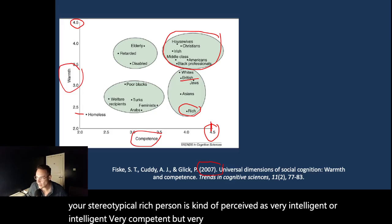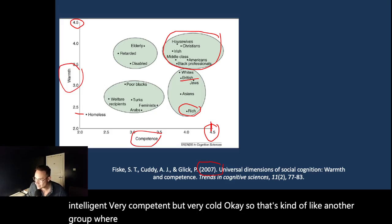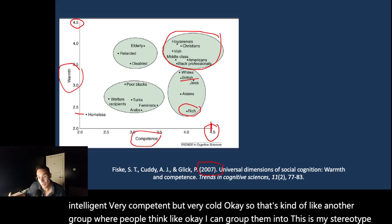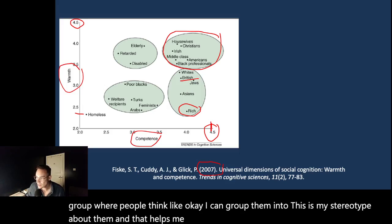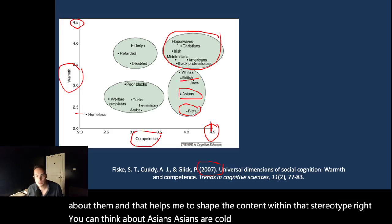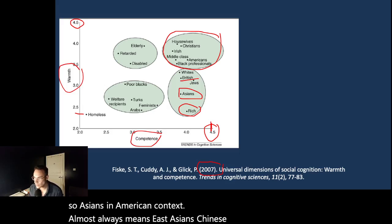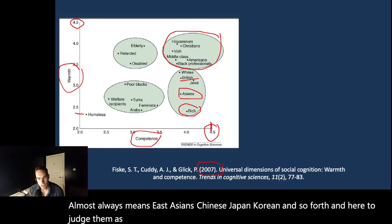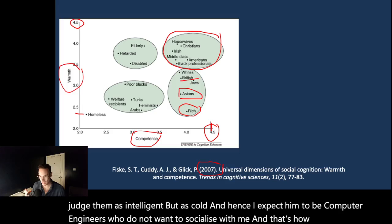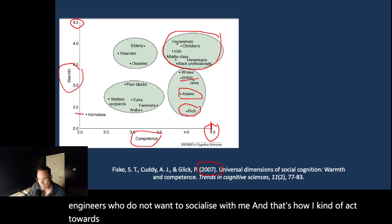You can think about Asians. Asians are cold and they're very intelligent. So Asians in an American context almost always means East Asians—Chinese, Japanese, Korean, and so forth. And here they judge them as intelligent but as cold, and hence I expect them to be computer engineers who do not want to socialize with me. And that's how I act towards them. That's another stereotype.